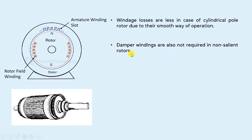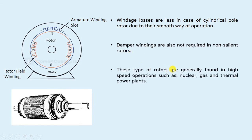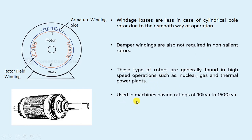These types of rotors are generally found in high-speed operations such as nuclear, gas, and thermal power plants. They are used in machines having a rating of 10 kVA to 1500 kVA.